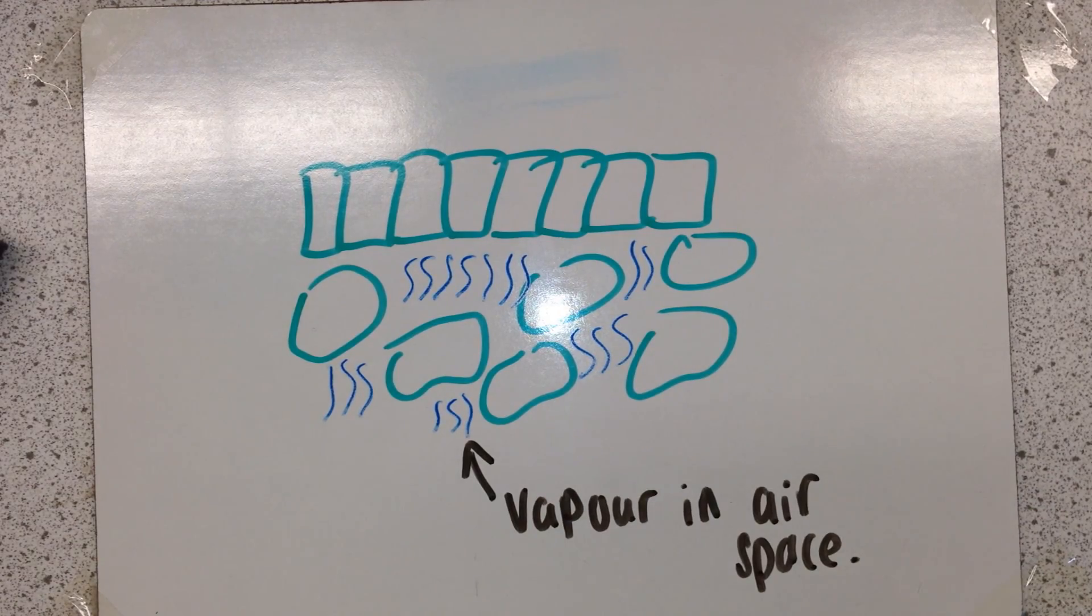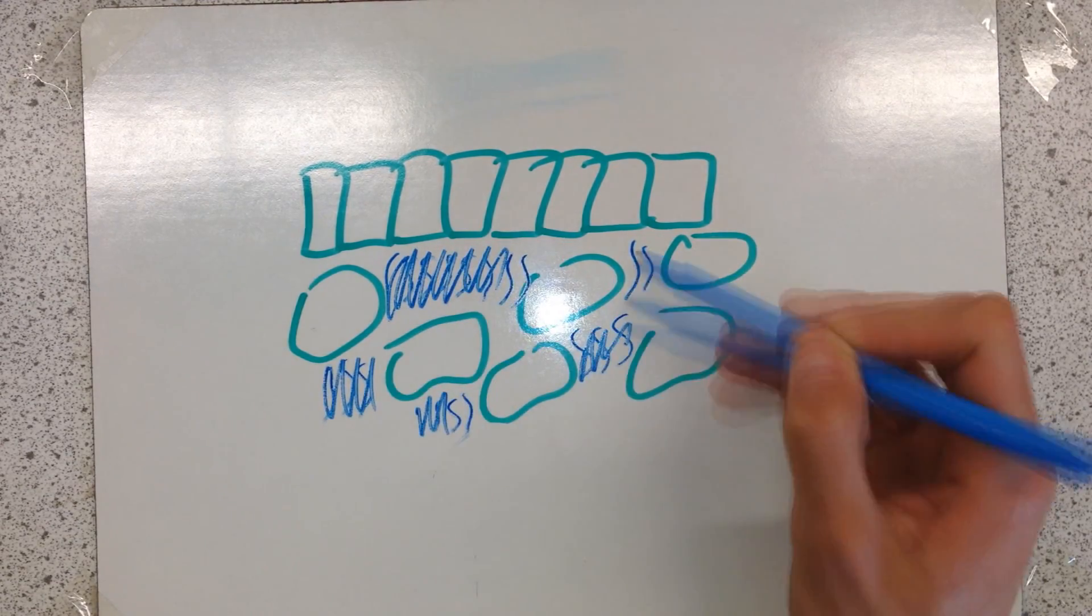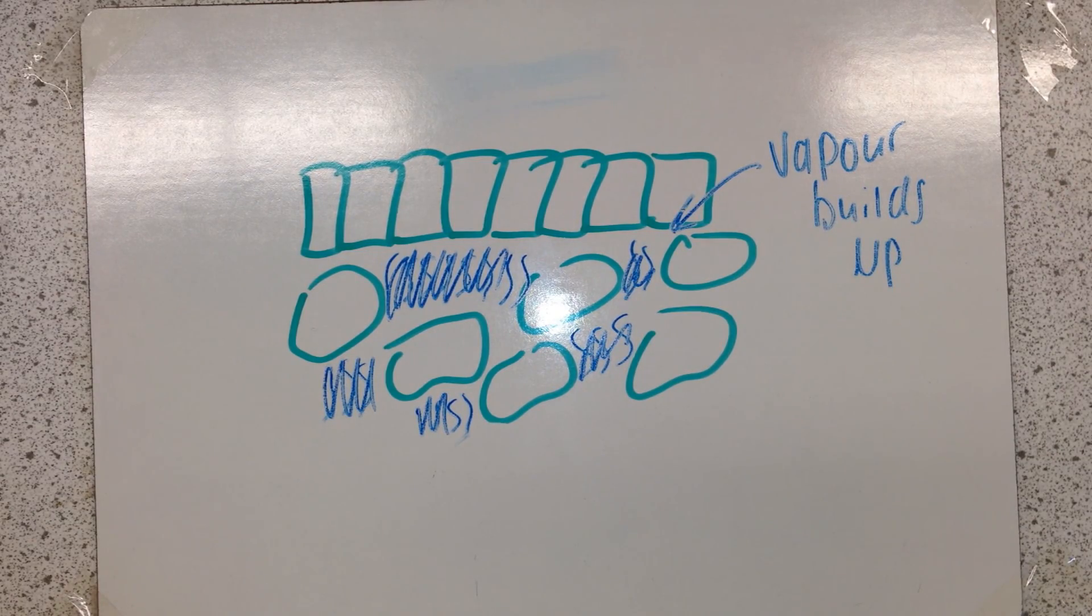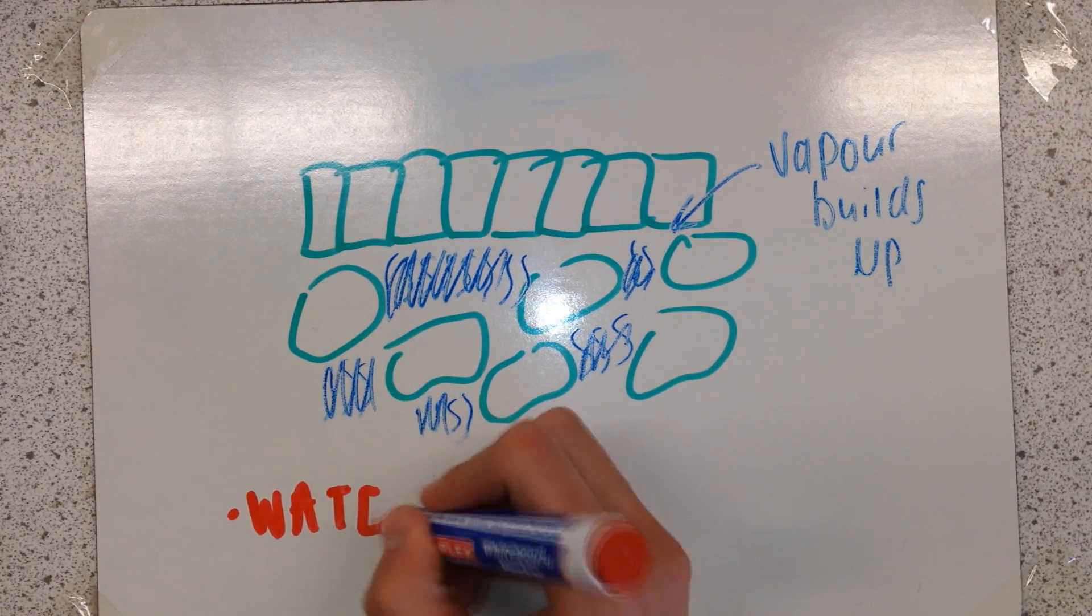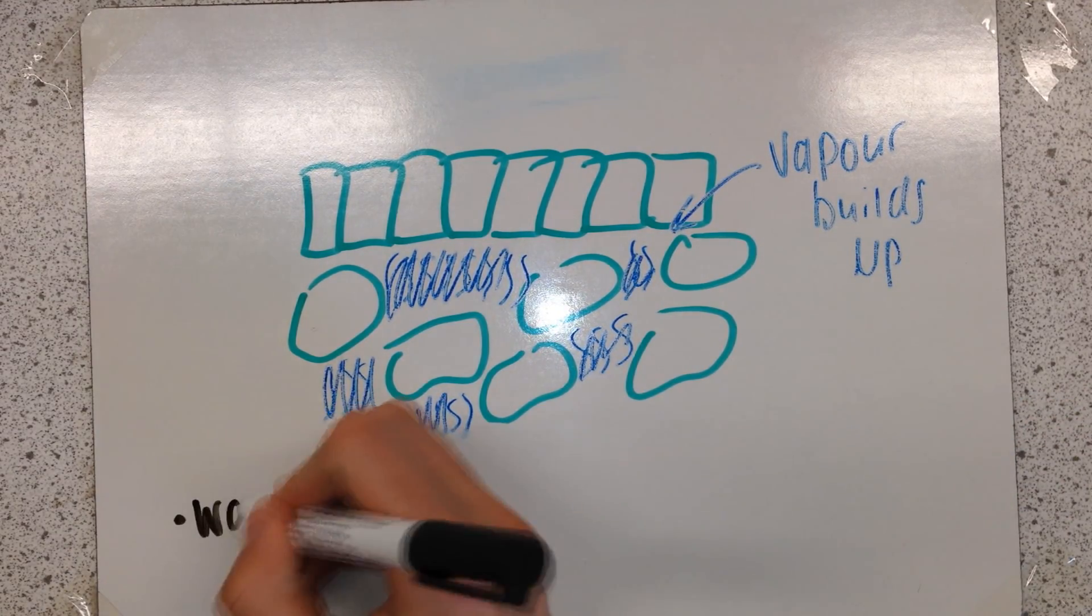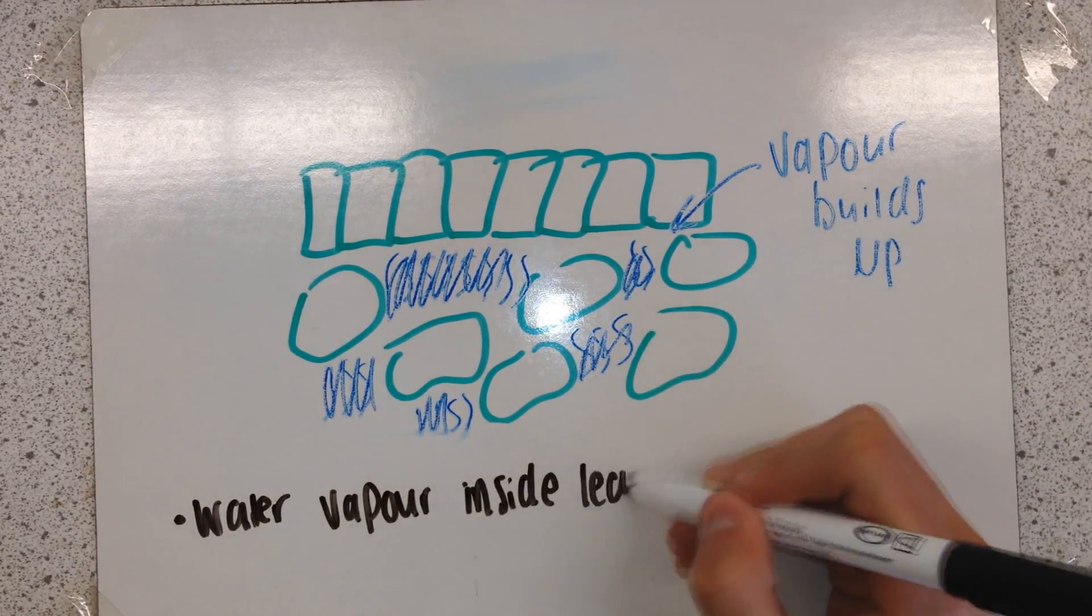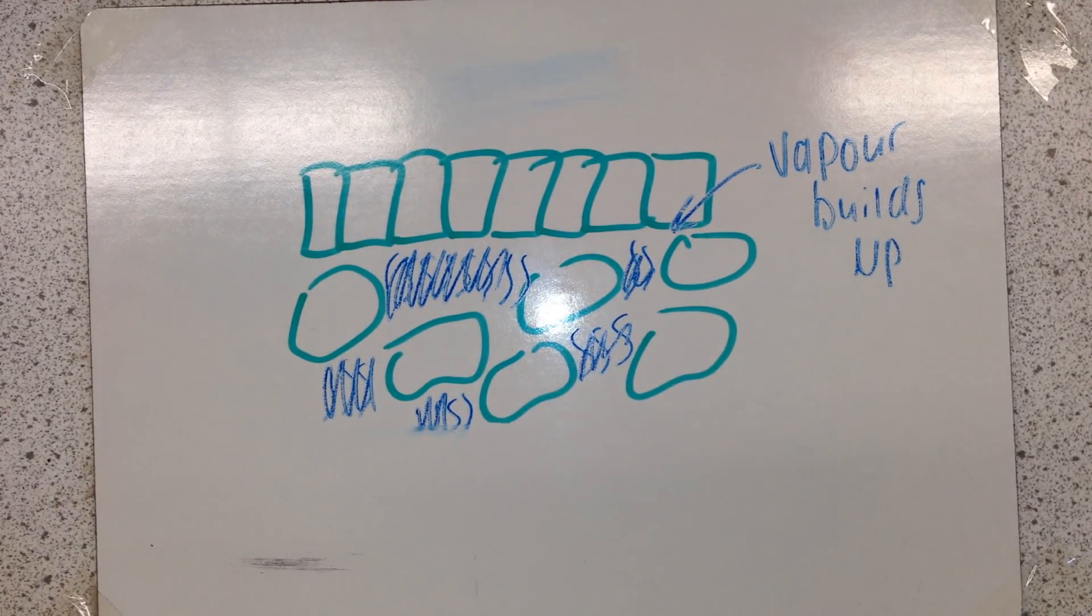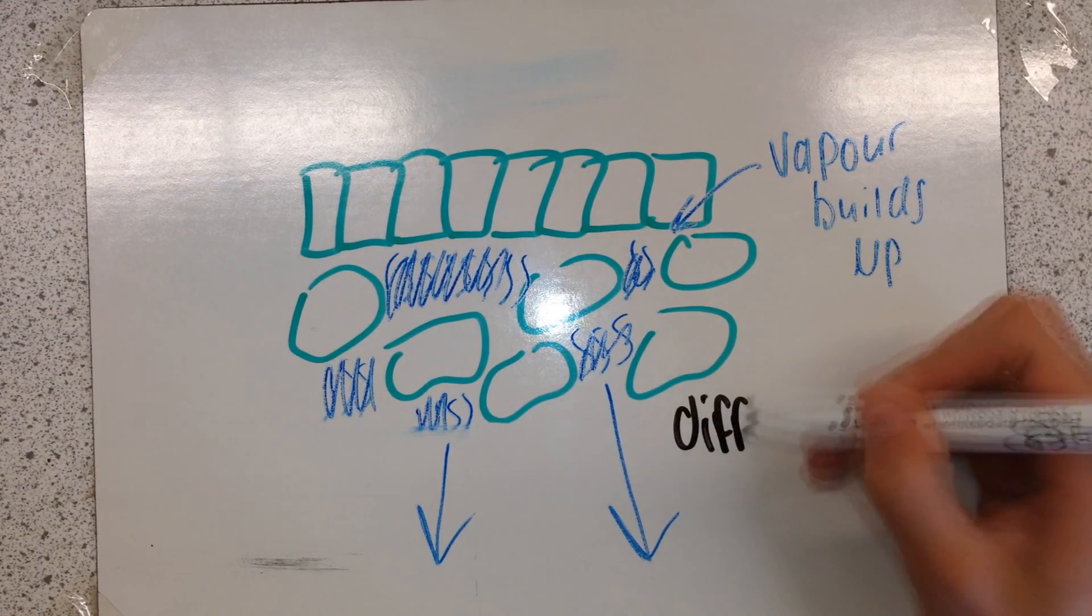Water vapor builds up in these large air gaps, which raises the water vapor potential gradient. This essentially means the concentration of water vapor inside the leaf is higher than outside the leaf.